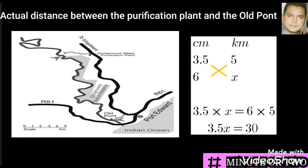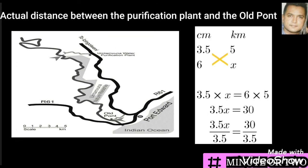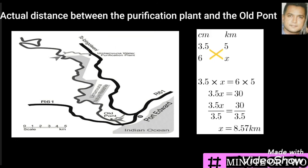Multiplying through, we get 3.5x equals 30. Divide both sides by 3.5. We arrive at 8.57 kilometers.